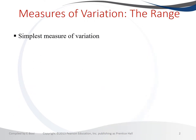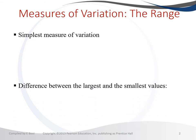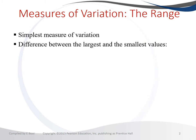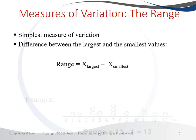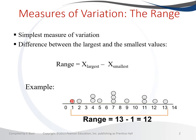The range is the simplest measure of variation. It tells you your range by taking the largest value and subtracting the smallest value. For example, if our data runs from 1 up to 13, the largest value is 13 and the smallest is 1. To calculate the range: 13 minus 1 equals 12.